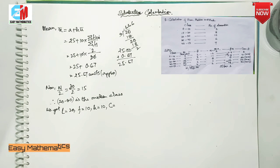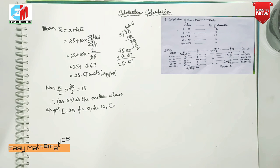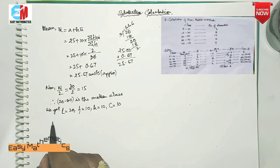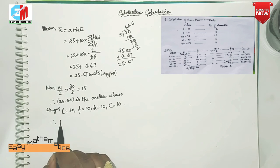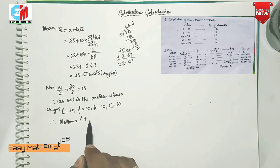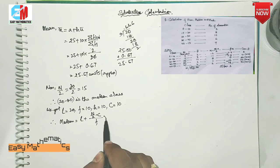C is the cumulative frequency just above the median class. Just above the median class is the cumulative frequency of the median class. The median is equal to L plus N by 2 minus C over F, into X.